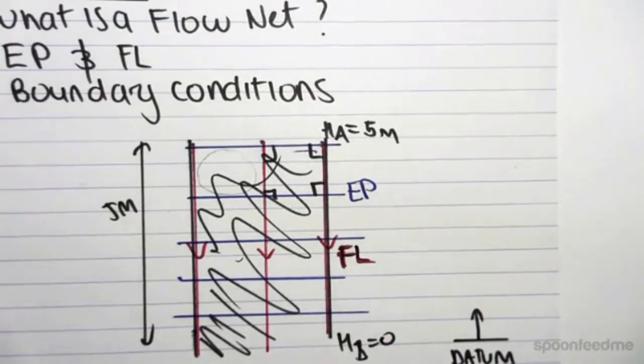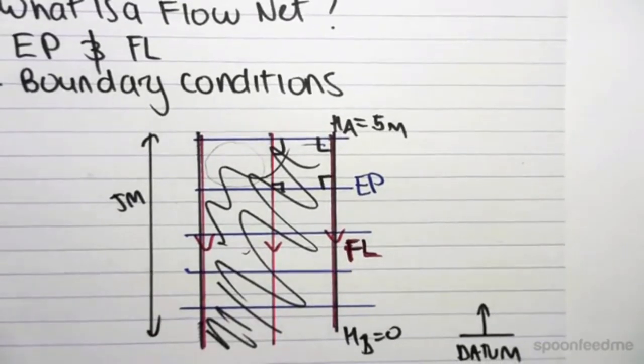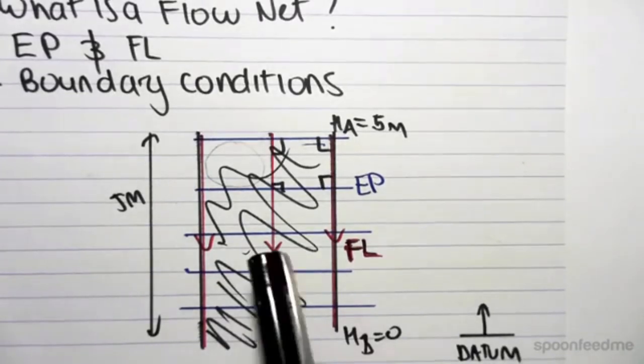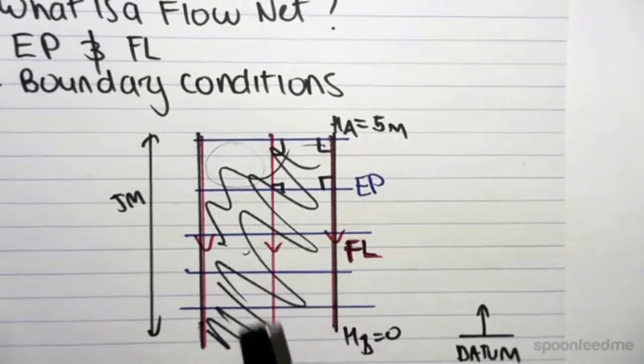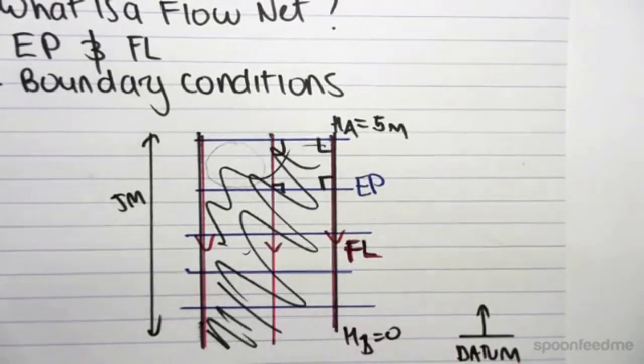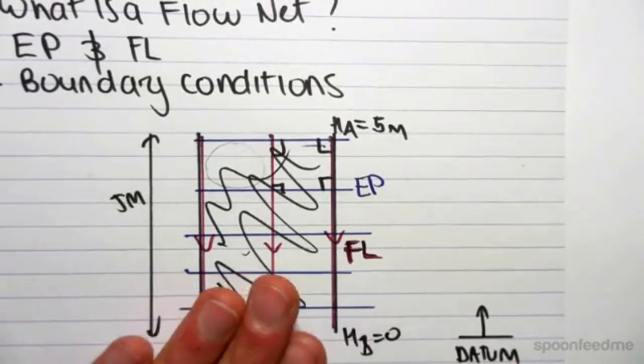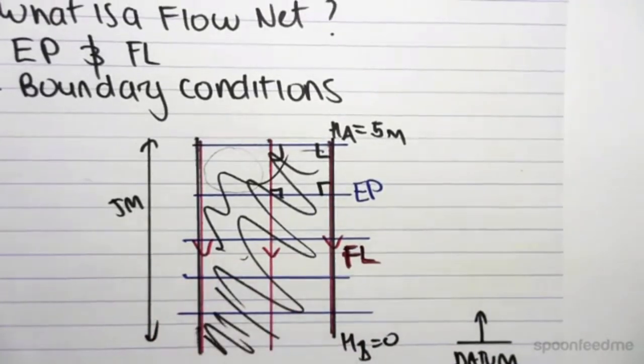So, why do we need to establish a flow net at all, you may ask. At the end of the day, we want to find flow through a sample of soil. So we saw in the previous videos, we could just use that formula Q, use the area, the coefficient of permeability, and the hydraulic gradient to work out the flow through the sample. For this one, you could do that. However, if we deal with a more complex example, that formula no longer applies.